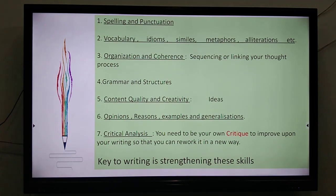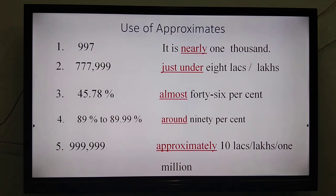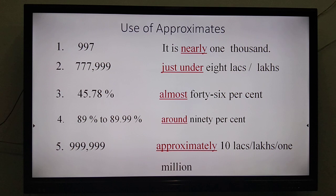So in this journey of strengthening these skills, the first thing we learn today is the use of approximates. For instance, if we have the number 997, instead of writing it in an expanded form, we can write it as 'nearly 1000.'